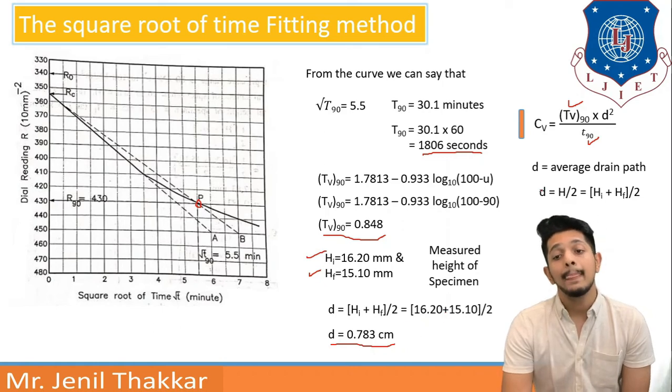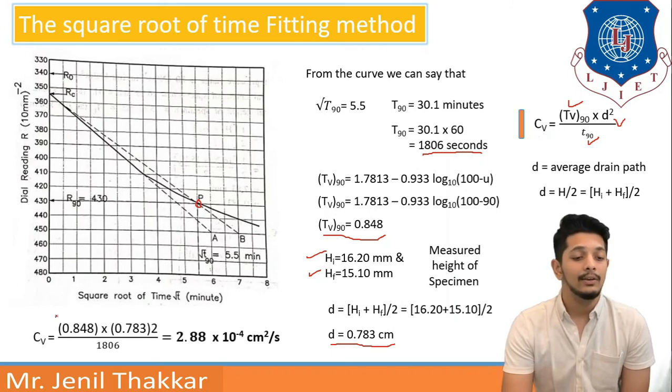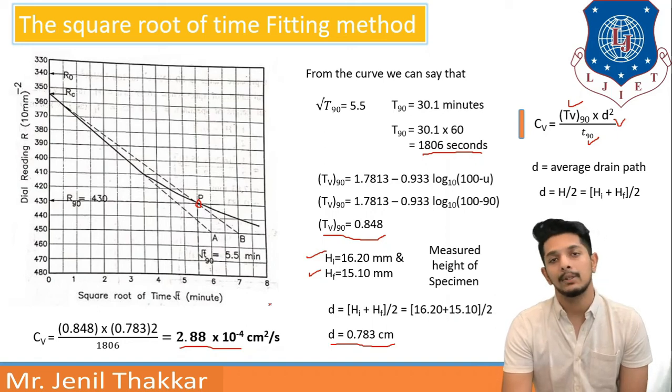Now I have d value, t90 value and tv time factor 90 value. Now I can calculate cv from this equation. So this equation putting all the values, I can get the answer as 2.88 into 10 raise to minus 4 cm square per second.